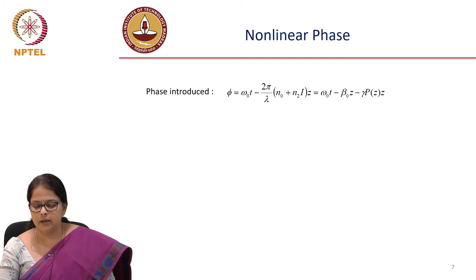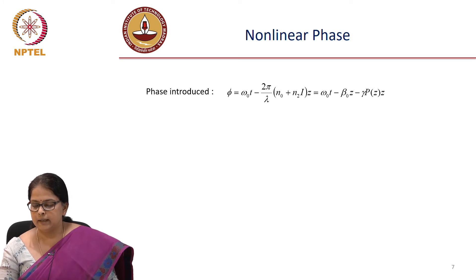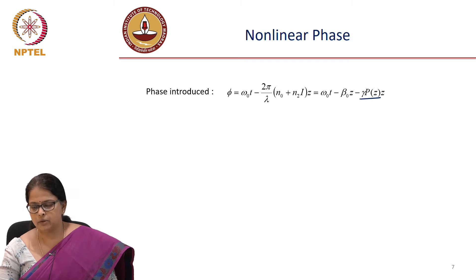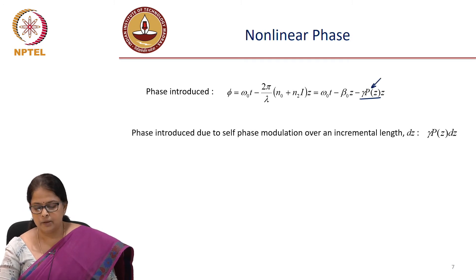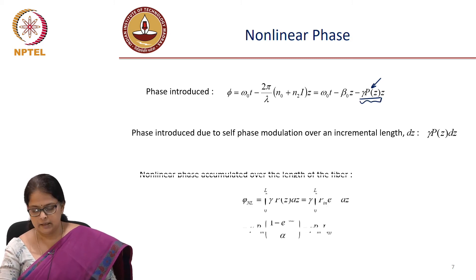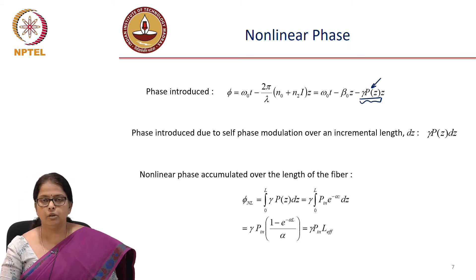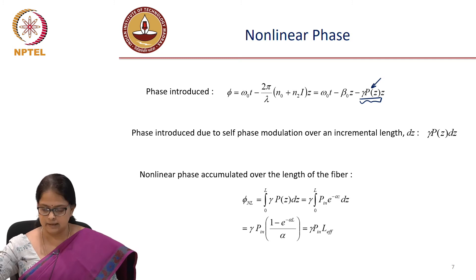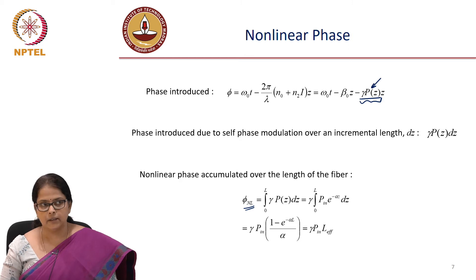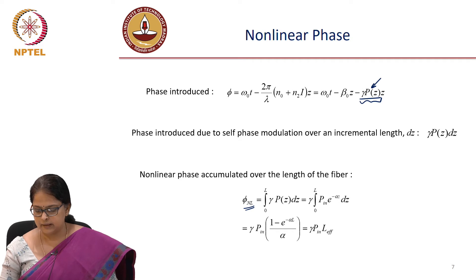The phase introduced is φ = ω₀t - (2π/λ)(N₀ + N₂I)z, which includes the term γPz. Since P is also a function of z, the phase introduced due to self-phase modulation over a length dz is γ·P(z)·dz. So the total nonlinear phase accumulated over the entire fiber length L is: φ_NL = ∫₀ᴸ γ·P(z) dz.